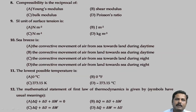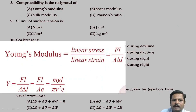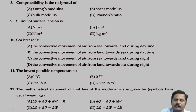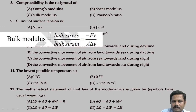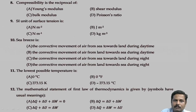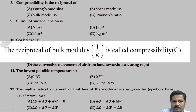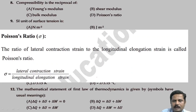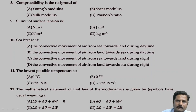Compressibility is the reciprocal of bulk modulus. Young's modulus is stress divided by strain. The shear modulus is tangential stress divided by tangential strain. Bulk modulus is bulk stress divided by bulk strain, and the reciprocal of bulk modulus is called compressibility. Poisson's ratio is lateral strain divided by longitudinal strain. So the correct option is C — compressibility is the reciprocal of bulk modulus.